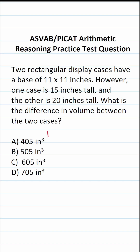On the ASVAB and PyCat, you're not given a reference sheet or a calculator. So in addition to knowing these basic formulas, you also have to be able to calculate this arithmetic by hand.